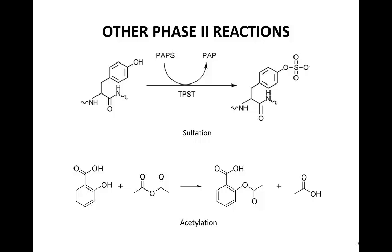An energy-rich donor is required for sulfation, and is more often 3'-phosphoadenosine-5'-phosphosulfate. Acetylation is another common reaction for aromatic amines and sulfonamides, and requires acetyl-CoA as a cofactor and N-acetyltransferase as the functioning enzyme.